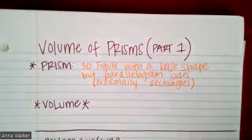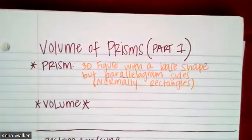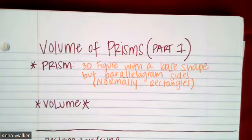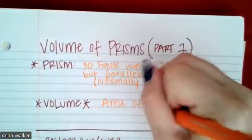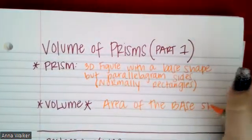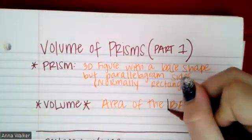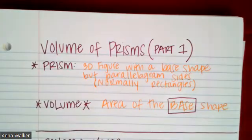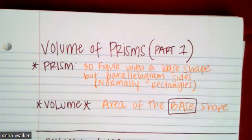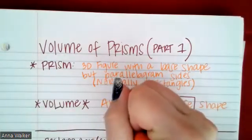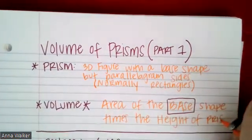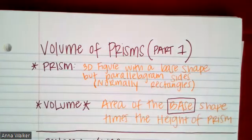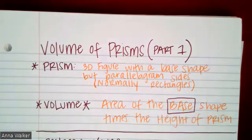When we talk about the volume of a prism, because prisms have these characteristics, there is a generic way we find the volume. We find the area of the base shape — and I'm going to put a box around the word 'base' because it doesn't mean the base of a triangle or trapezoid; it means the base shape — times the height of the prism, meaning how tall the prism is.